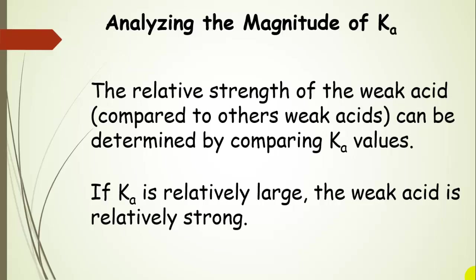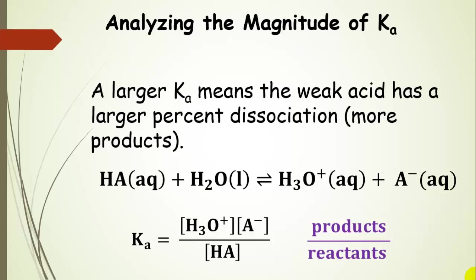Let's talk about analyzing the magnitude of a Ka value to get an idea of whether a weak acid is relatively strong or relatively weak compared to others. We can do this by comparing the magnitude of the Ka value. If it's relatively large, the weak acid is relatively strong. A larger Ka value means a larger percent dissociation — more products, more hydronium — making it a relatively stronger weak acid.